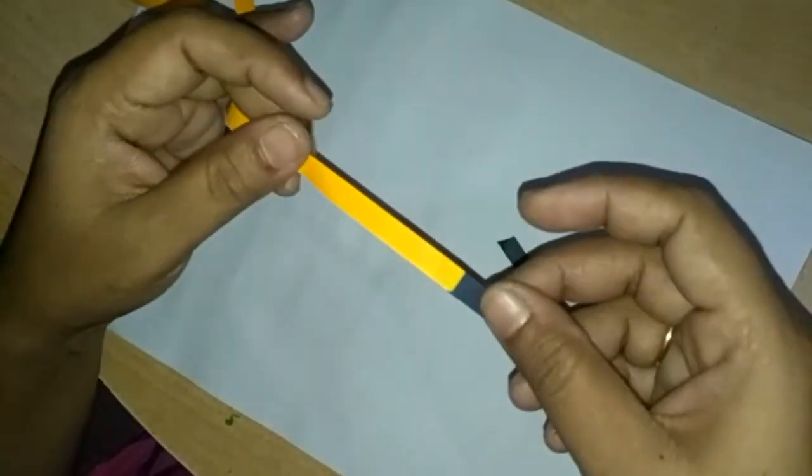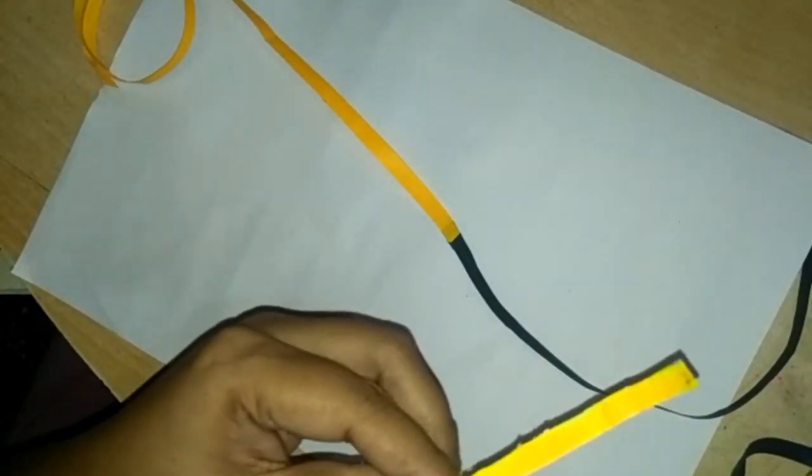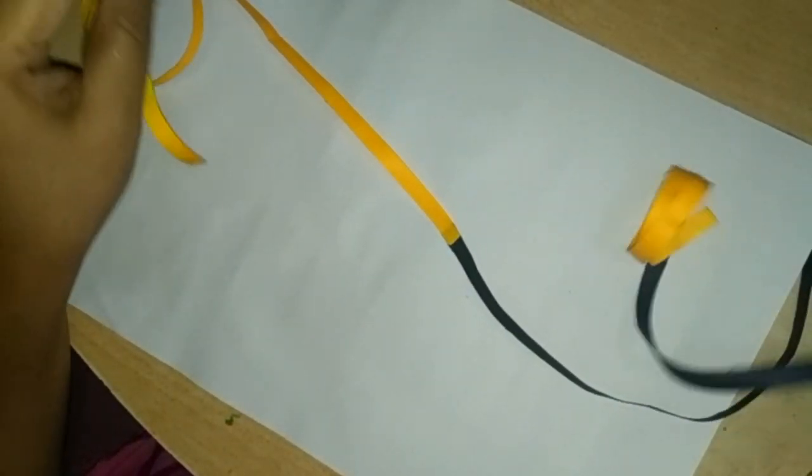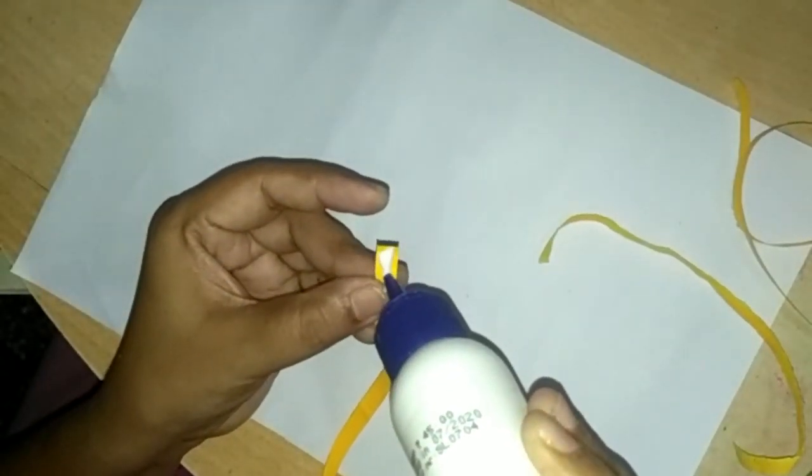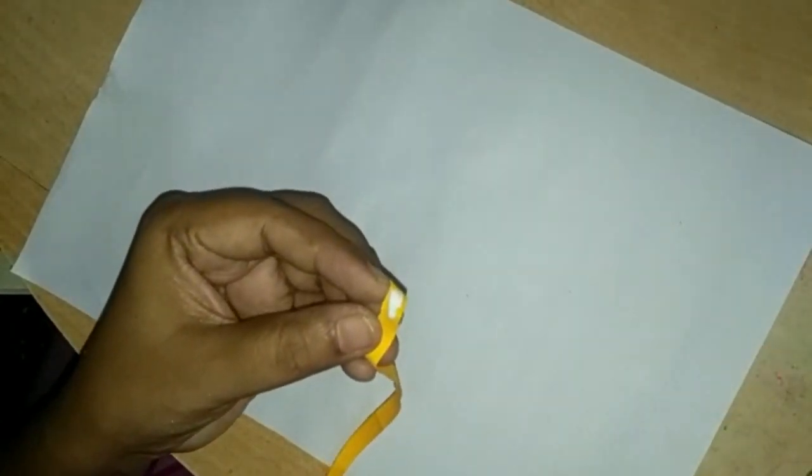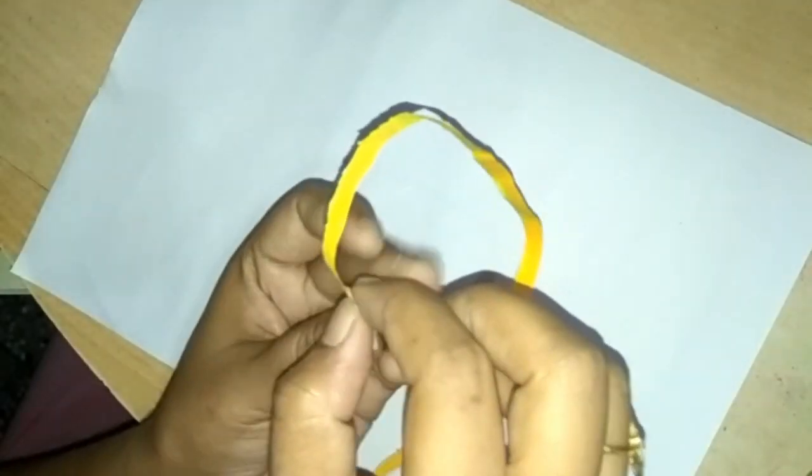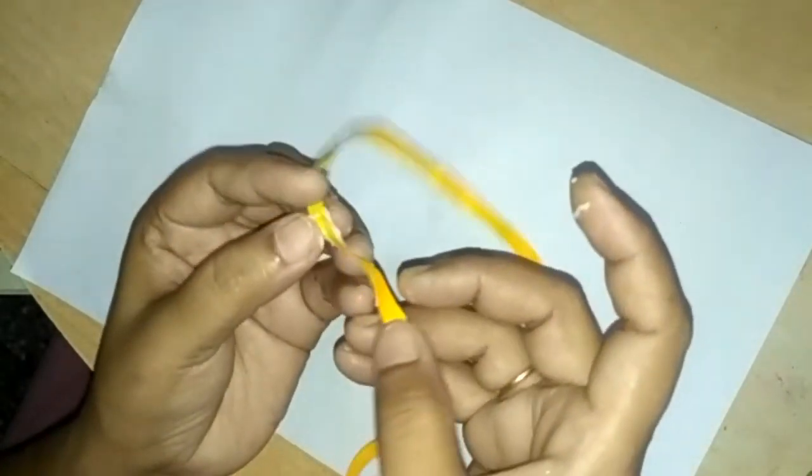I take a yellow full quilling strip and black half strip and I joined them with a fake oil. I made all strips like this. I joined two yellow strips with a fake oil. Join two strips like this.